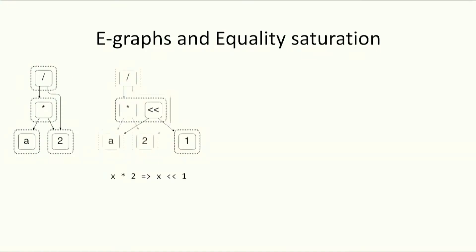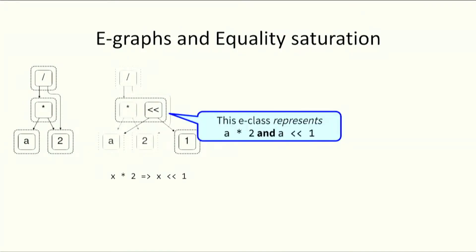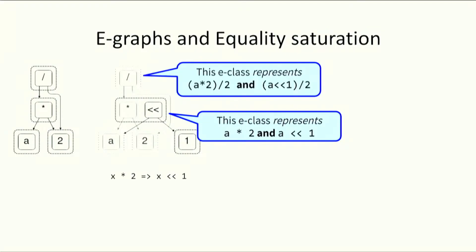We apply rewrite rules to this eGraph and we grow the eGraph. After the rewrite, the eClass in the middle has two eNodes and it represents two terms: A times two and a left shift by one. The eClass at the top represents A times two over two and A left shift one over two.